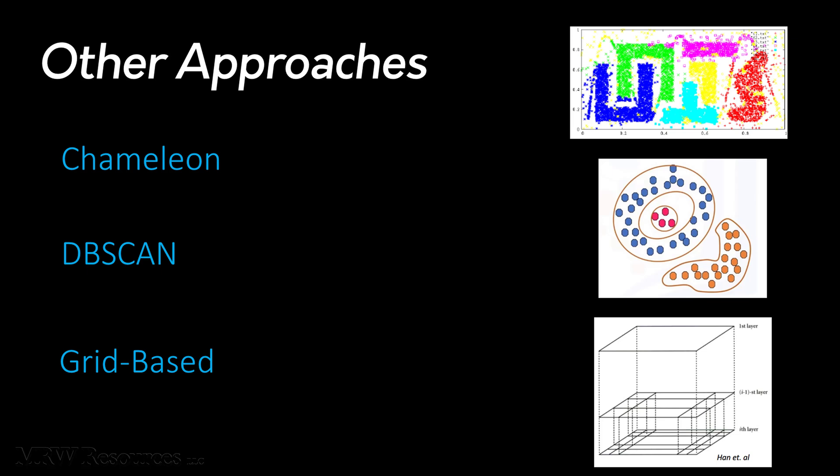You can actually use a k-nearest neighbors type approach here to build a Chameleon type cluster as well. Your data objects end up connected to each other. One object ends up among similar objects of another cluster. You can use a neighborhood radius approach to evaluate the density of the region to help find the clusters.